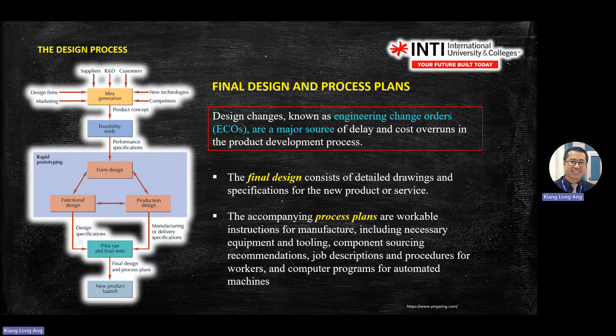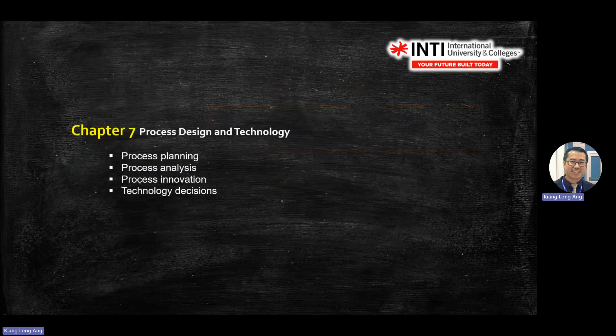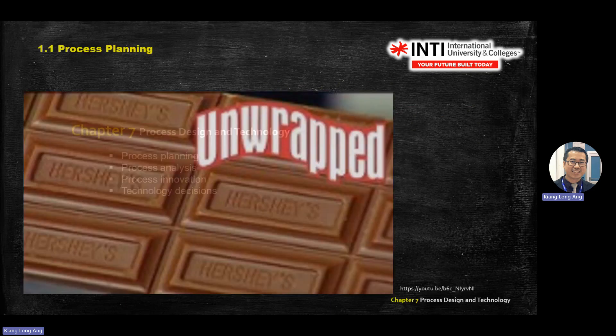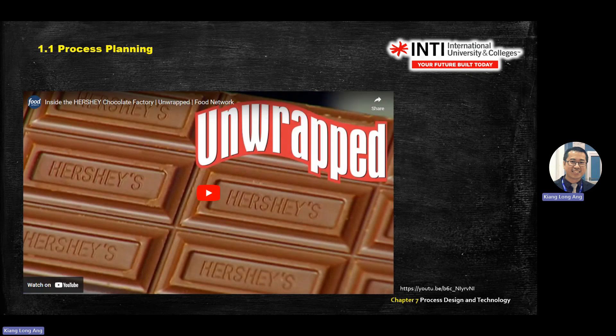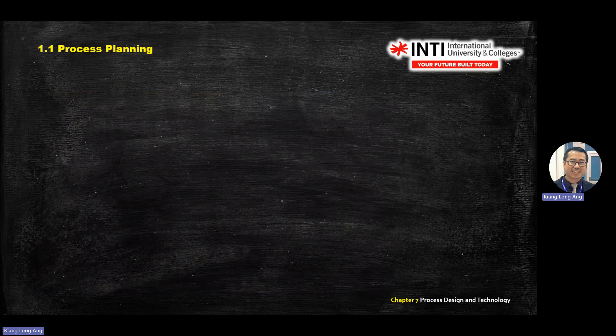We have completed this section. This morning I'll tell you how to write the essay for these five processes. Next, we go into process planning, analysis, and technology decision. This involves basic calculations, more on cost and process. Here is a chocolate manufacturing video.